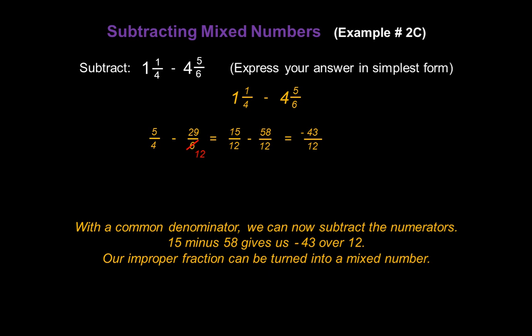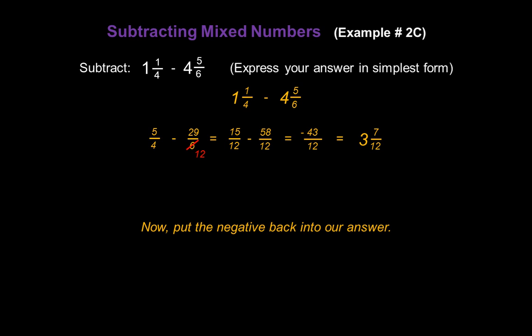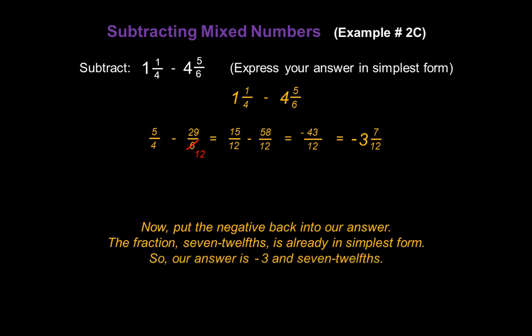Our improper fraction can be turned back into a mixed number. We ignore the negative sign for now and divide forty-three by twelve, which is three. Since twelve times three is thirty-six, we have a remainder of seven over twelve. Now we put the negative sign back into our answer. The fraction seven-twelfths is already in simplest form, so our answer is negative three and seven-twelfths.